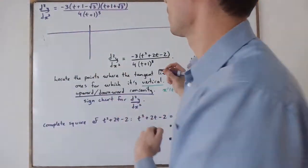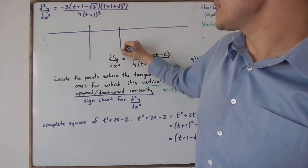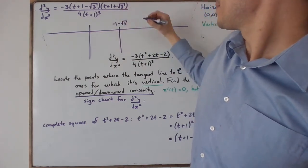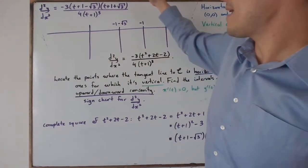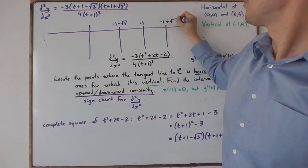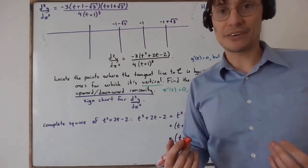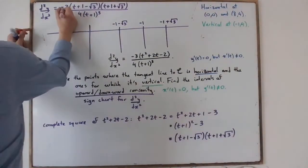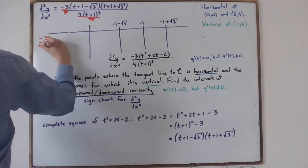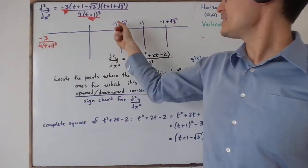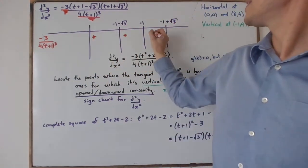The values where the second derivative is zero or does not exist are: t equals negative 1 minus √3 (the smallest), then t equals negative 1 where the derivative does not exist, and t equals negative 1 plus √3. We consider the factor negative 3 over 4 times (t + 1)³ as a single factor. When t is below negative 1, this is positive; when t is above negative 1, it is negative.